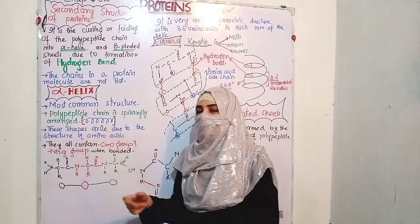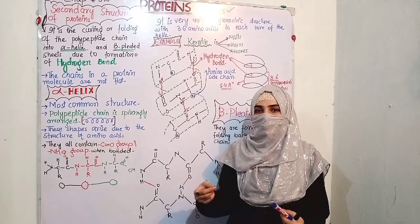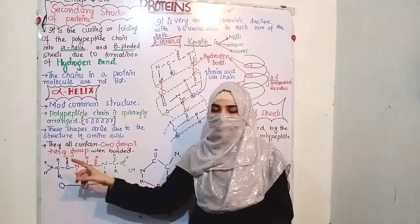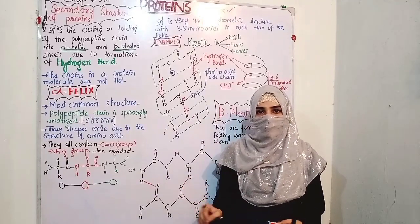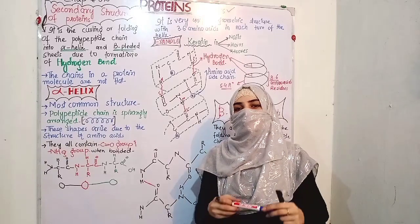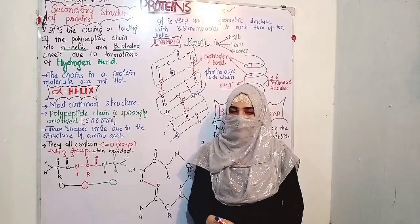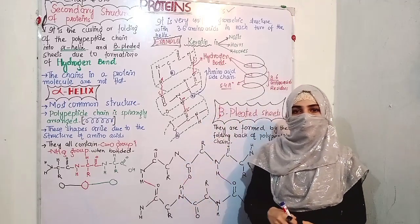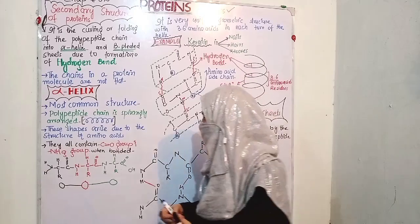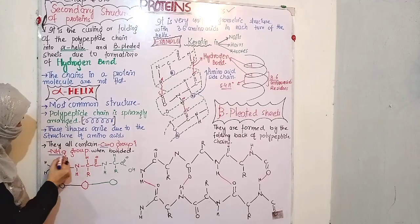Why does this happen? Every amino acid has a carboxyl group and an NH (amino) group — we studied this in the previous section. When we examined the amino acid structure, we saw the alpha carbon, the carboxyl group, and the amino group. Every amino acid has both a carboxyl group and an amino group.